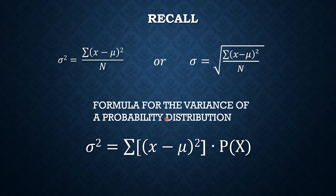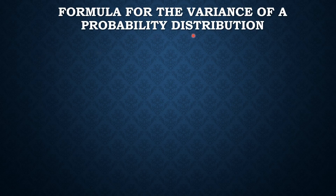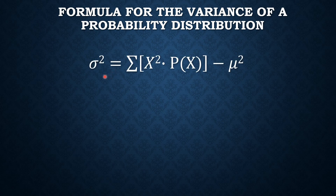Here is the general formula for the variance of a probability distribution. However, that formula is quite long when computed. That is why in this video I'm going to show you a simplified formula. The simplified formula: sigma squared equals the sum of squared outcomes times their corresponding probability — add all of those, and then minus mu squared, or the square of the mean. That's how we interpret this formula.